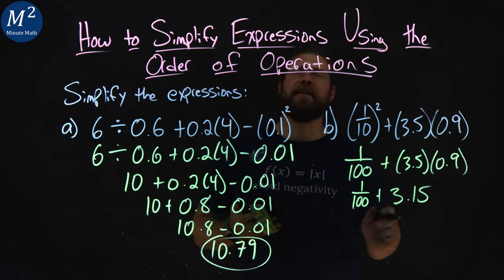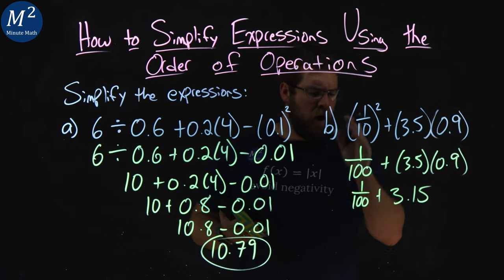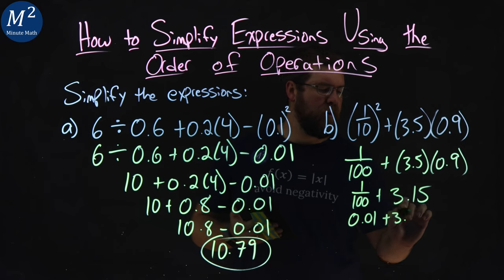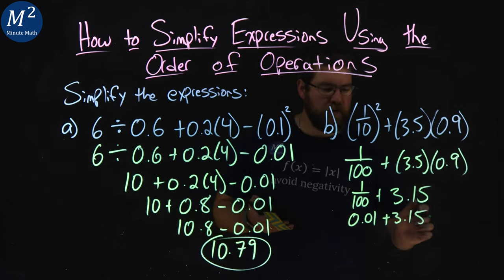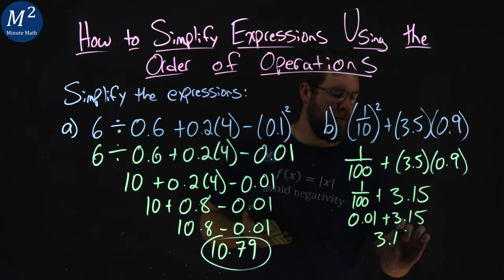From there, we got a fraction, we got a decimal, how can we add them? Let's convert the fraction to a decimal. 1 over 100 is just 0.01. Some of these things you'll know off the top of your head soon enough. 0.01 plus 3.15 comes out to be 3.16.